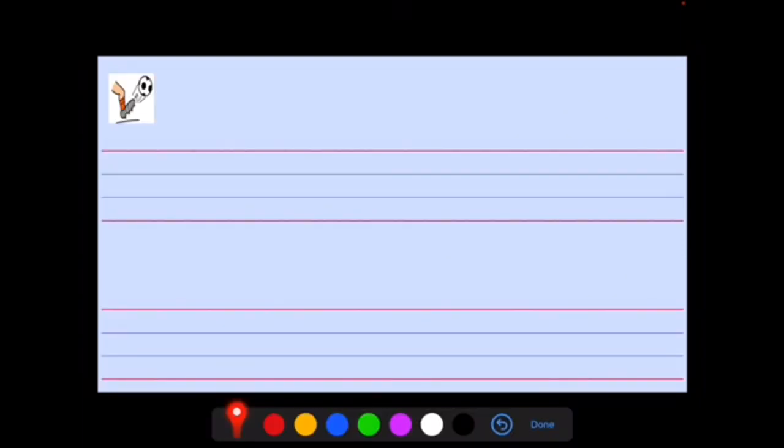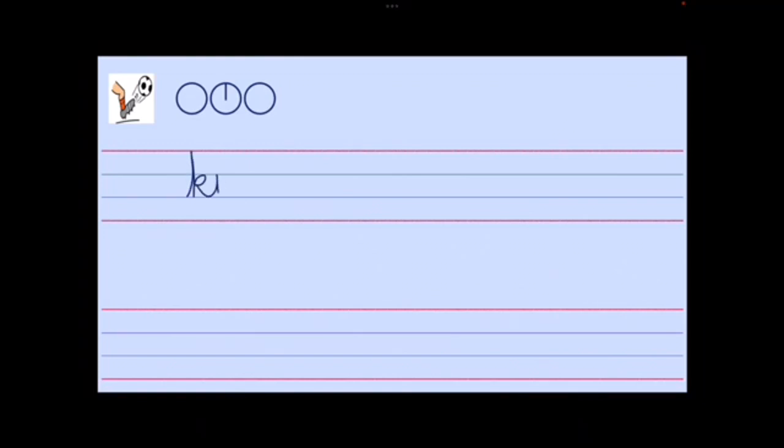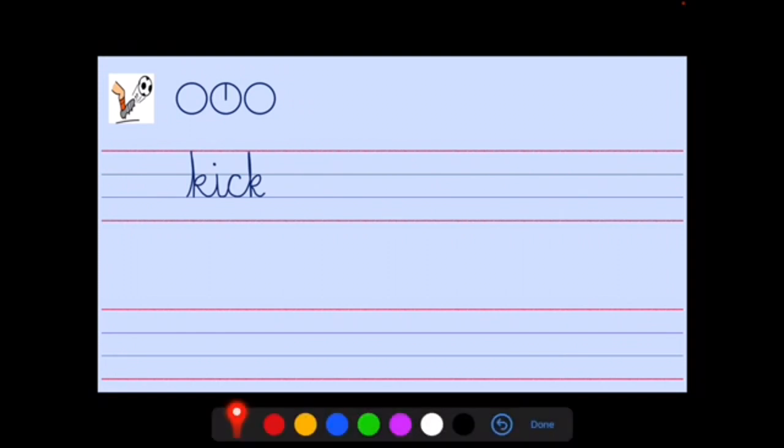And here is the word kick. How many sounds can we hear? K, I, K. So let's have a go at writing this word that has K at the beginning and K at the end. We can hear K before I, so we know to put a K. And then we could hear K at the end of a one syllable word with a short vowel sound, so we put CK. Two spelling choices in the same word.